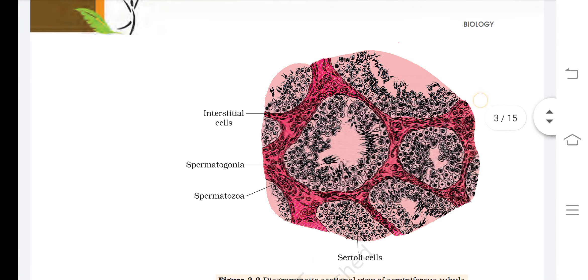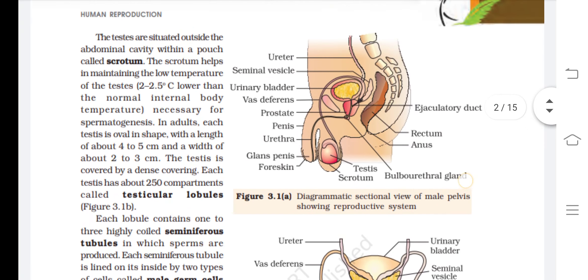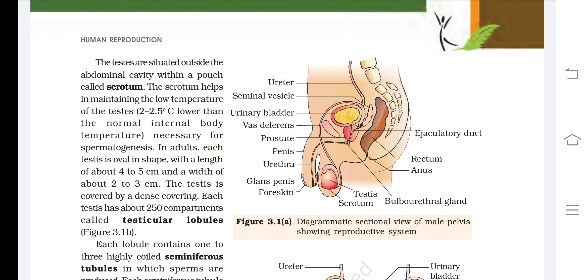Now let us look at the diagrams. This is the sectional view of a male pelvis showing the reproductive system. Labels include: ureter, seminal vesicle, urinary bladder, vas deferens, prostate, penis, urethra, glans penis, foreskin, ejaculatory duct, rectum, anus, and the bulbourethral gland.